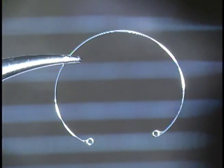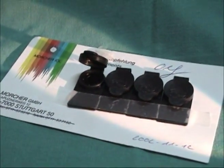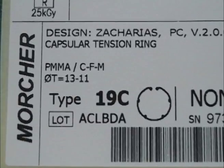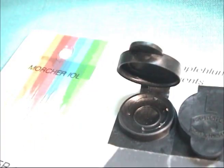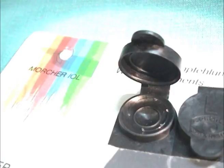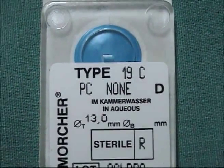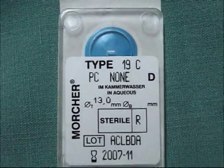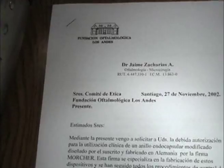A plurality of eyelets were added to the capsular ring body at the inner aspect of the ring loop. Prototypes were manufactured under our specification by Morcher from Germany, and labeled Model C-19. These prototypes were first released as non-sterile samples for inspection and in vitro experimental surgery. Later, sterile samples packaged and labeled under medical device standards for human use were obtained, and we received approval from the ethics committee of our institution before proceeding with limited human testing.